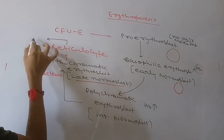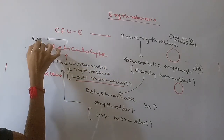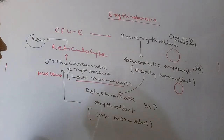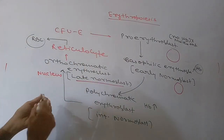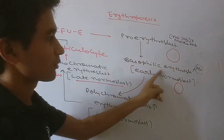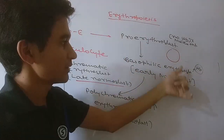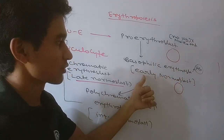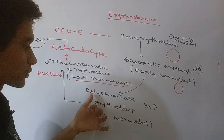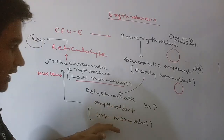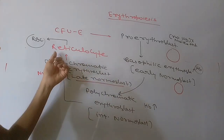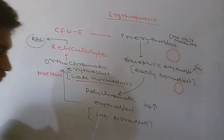Finally, the reticulocyte is converted into the mature RBC — the erythrocyte. To summarize the stages: pro-erythroblast → basophilic erythroblast (early normoblast, where hemoglobin first appears) → polychromatic erythroblast (intermediate normoblast) → orthochromatic erythroblast (late normoblast) → reticulocyte → RBC.